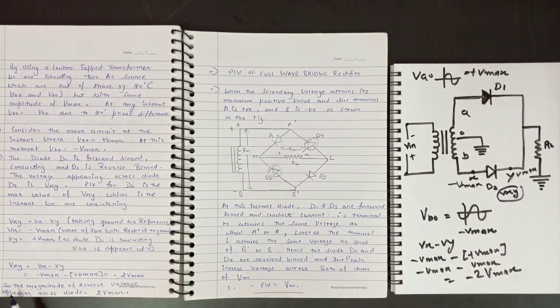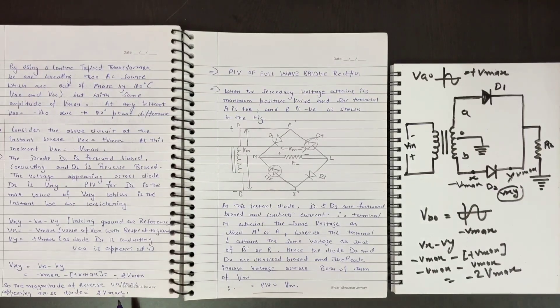So the magnitude of the reverse voltage appearing across the diode is twice the maximum voltage, i.e., 2Vmax.